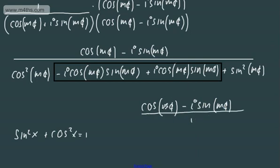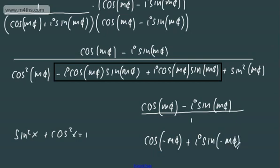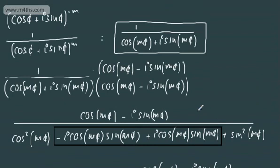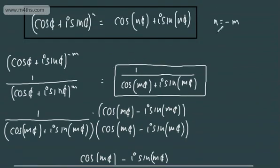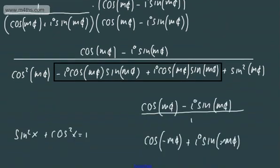Going back to our odd and even functions: to write this in the form of De Moivre's theorem we need a plus sign. Since cosine is an even function, we can write cos(mθ) as cos(−mθ), and since sine is an odd function, −sin(mθ) = sin(−mθ). So we get cos(−mθ) + i sin(−mθ), which clearly shows the theorem holds for a negative integer where n = −m.